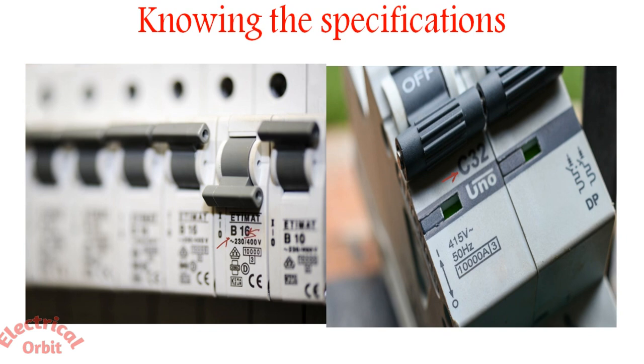This 16 means the current rating of this MCB is 16, whereas in this picture it is 32, that means the current rating of this MCB is 32 ampere.